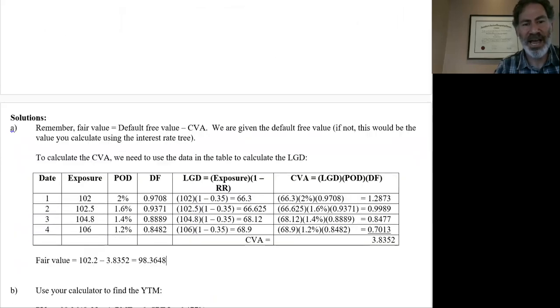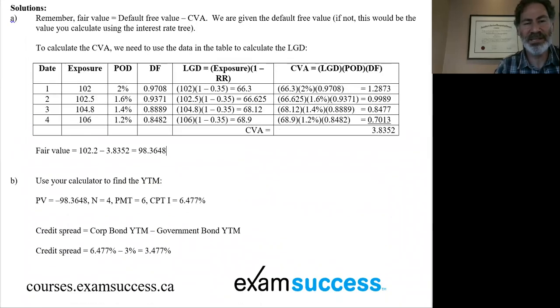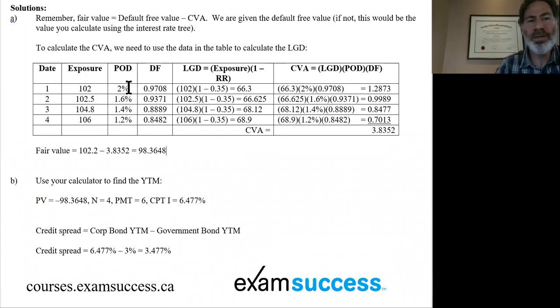So here's a table I've written out. This is it to summarize. So we know that the fair value is going to be the default free value adjusted for this CVA. How do we calculate the CVA?